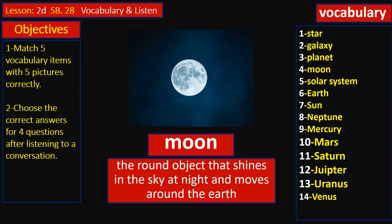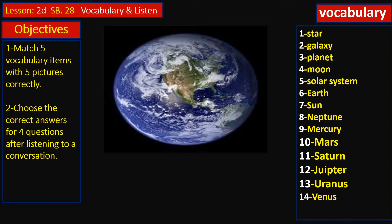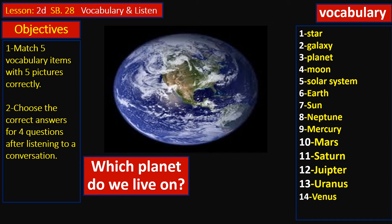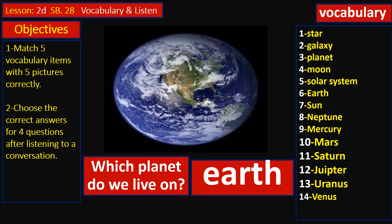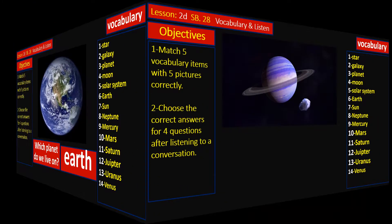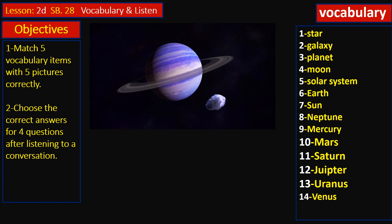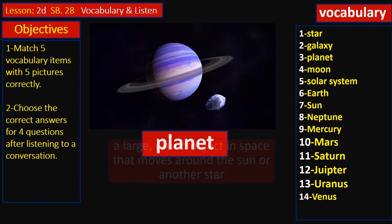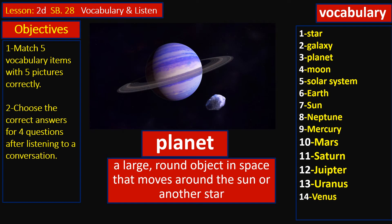Now have a look at this one. What do we call this one? Which planet do we live on? What do you think? For sure, it's Earth. That's right. Have a look at this one. What is the suitable vocabulary for this one? Yeah, planet. That's right. A large round object in space that moves around the sun or another star.